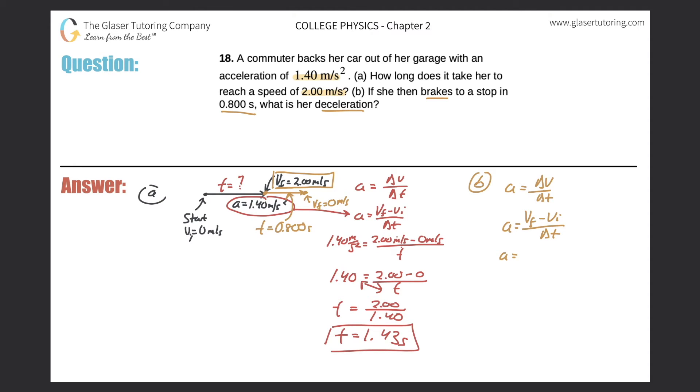So now the final velocity we said was 0 meters per second. The initial velocity was 2.00 meters per second. Remember, I'm only considering the yellow frame here. And then the time it took her to go from 2 meters per second to 0 occurred in 0.800 seconds. Great.